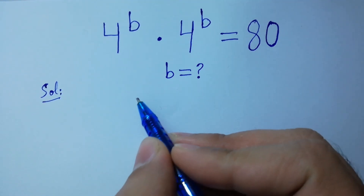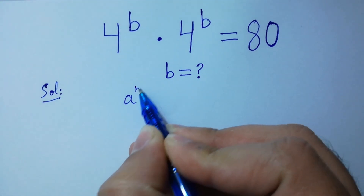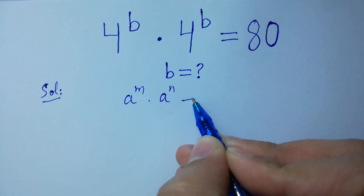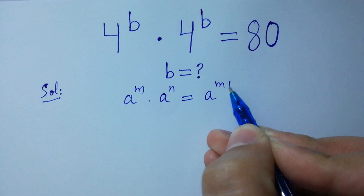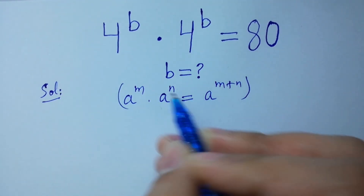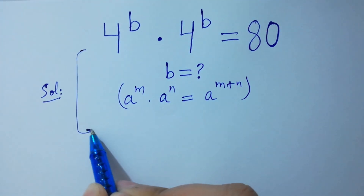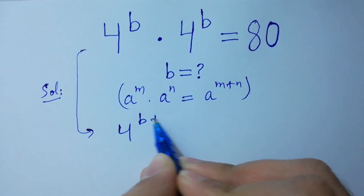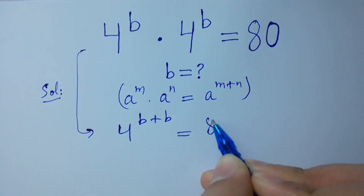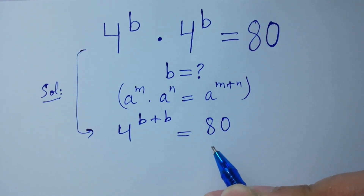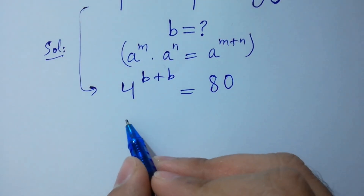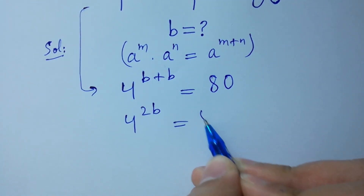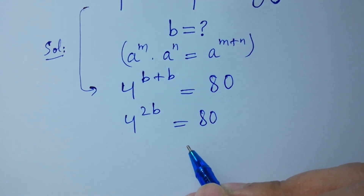As we know that a to the power m times a to the power n equals a to the power m plus n. So it will be equal to 4 to the power B plus B equals 80. Therefore, 4 to the power 2B equals 80. Take log on both sides.